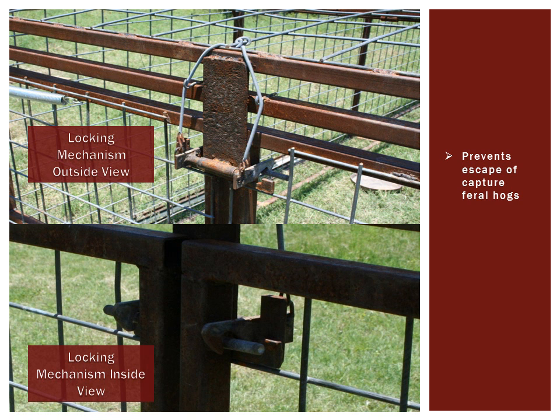Once inside the trap, feral hogs will typically put the most pressure on the entrance. Continuous catch gates offer the potential for trapped hogs to escape. Adding a locking mechanism to your trap's doors will prevent unintentional escapes.